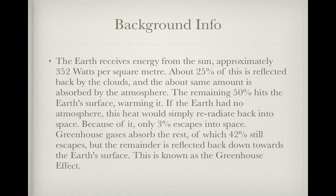Background info. This is just something you're going to have to understand if you want to understand how the climate model works. The Earth receives energy from the Sun, approximately 352 watts per square meter. About 25% of this is reflected back by the clouds, and about the same amount is absorbed by the atmosphere. The remaining 50% hits the Earth's surface, warming it. If the Earth had no atmosphere, this heat would simply re-radiate back into space. Because of it, only 3% escapes back into space. Greenhouse gases absorb the rest — 42% still escapes, but the remainder is reflected back down towards the Earth's surface. This is commonly known as the greenhouse effect.